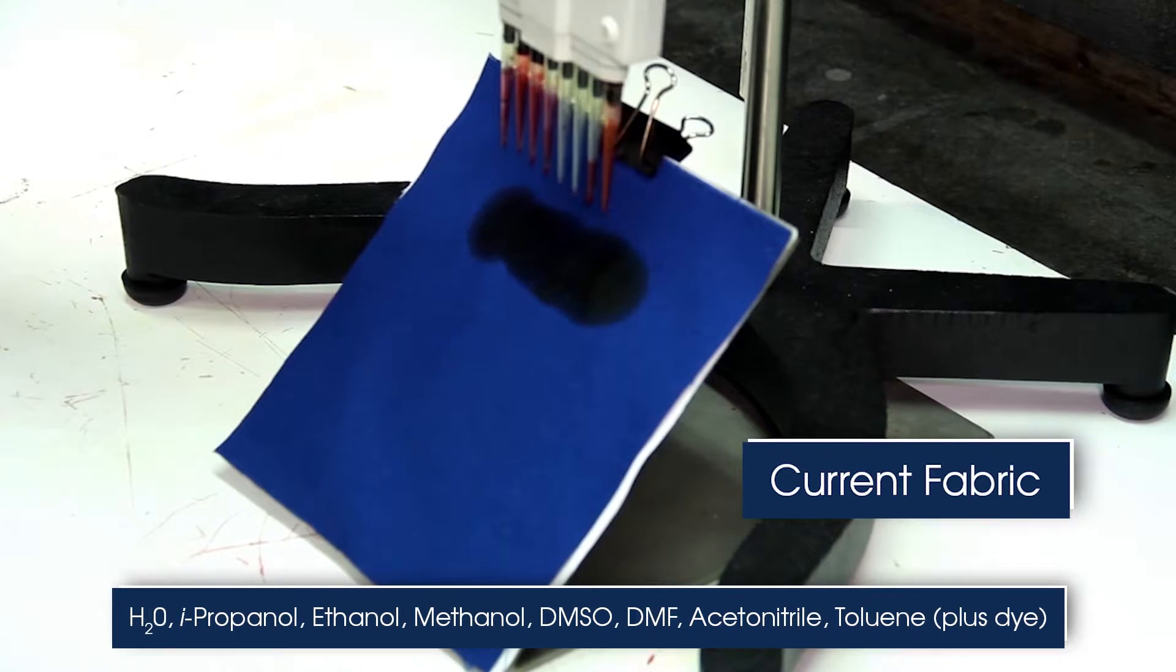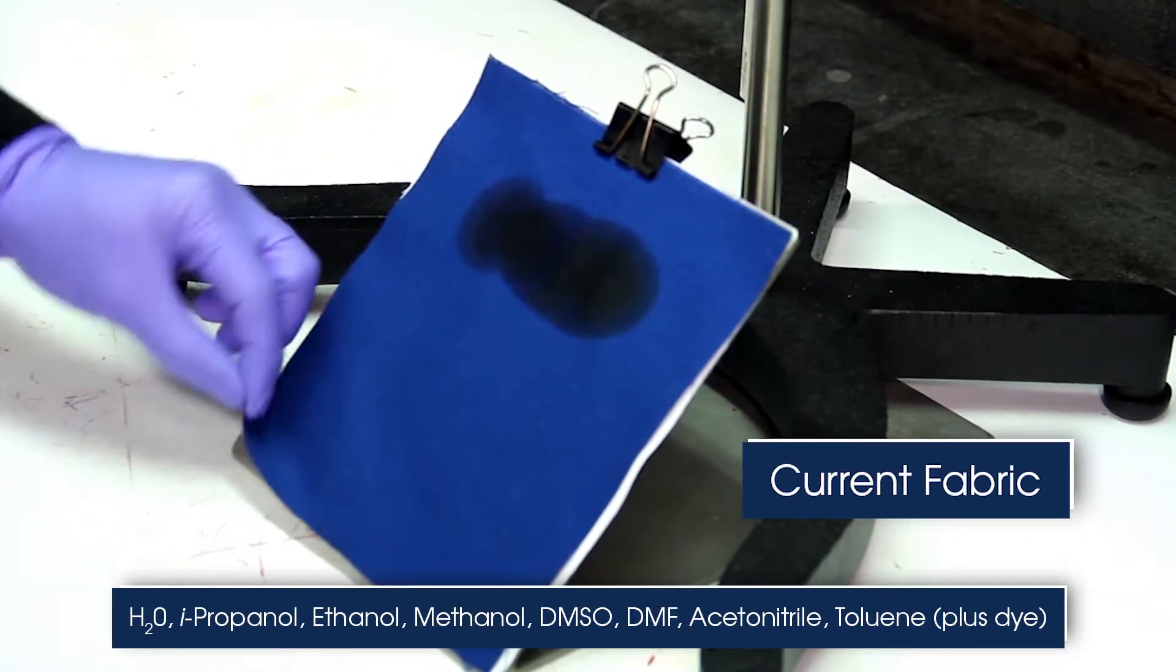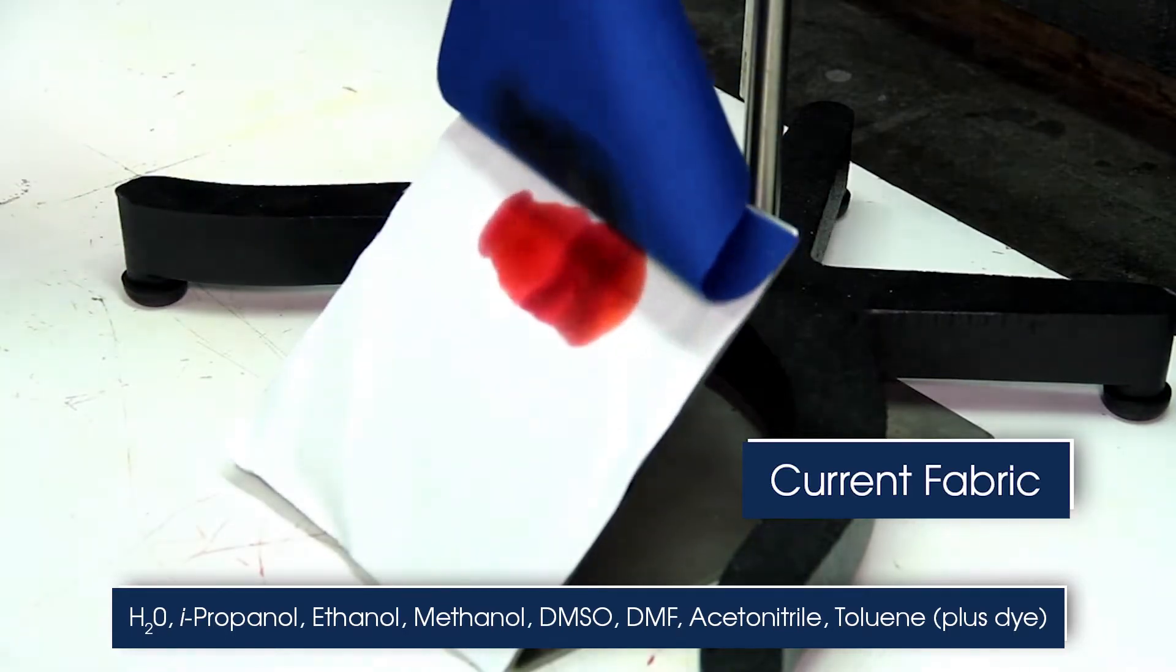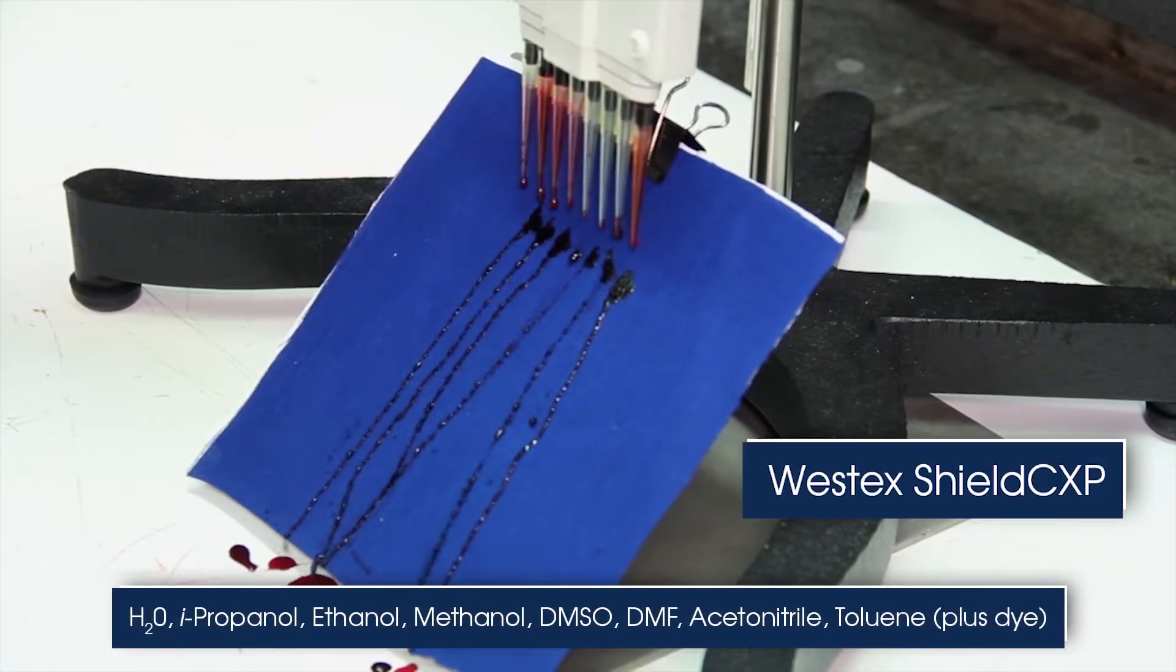And in this demonstration, you can see how the various liquid chemicals easily penetrate through the current fabric, but when they're released on a Shield CXP, the liquids quickly roll off the fabric without penetrating it.